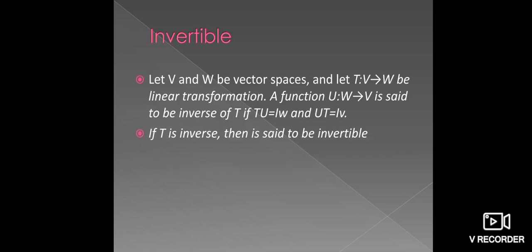Now, see the definition of invertible. Let V and W be vector spaces and T be the linear transformation from vector space V into another vector space W. A function U mapping from W to V is said to be the inverse of T if it satisfies two conditions: T of U equals the identity on W, and U of T equals the identity on V. If T has an inverse, then T is said to be invertible. Thank you.